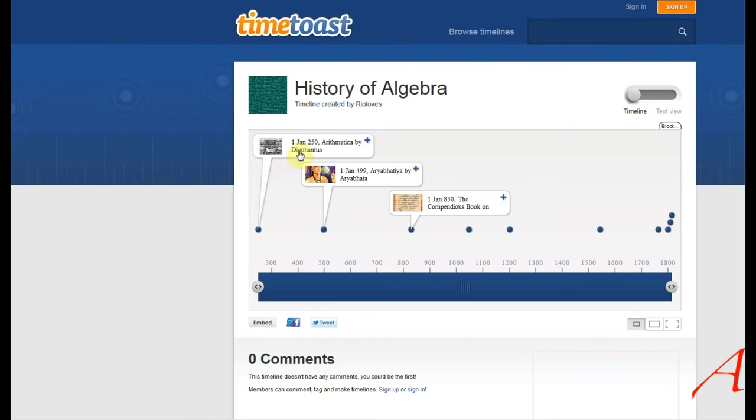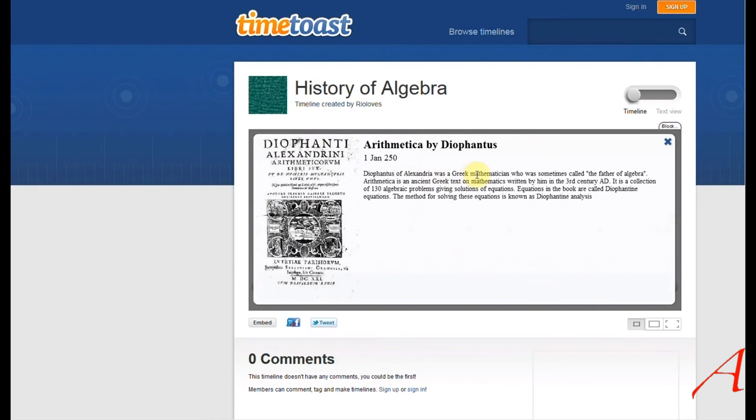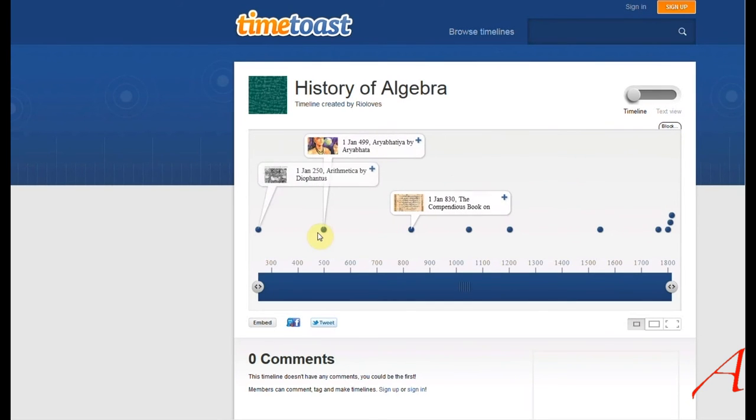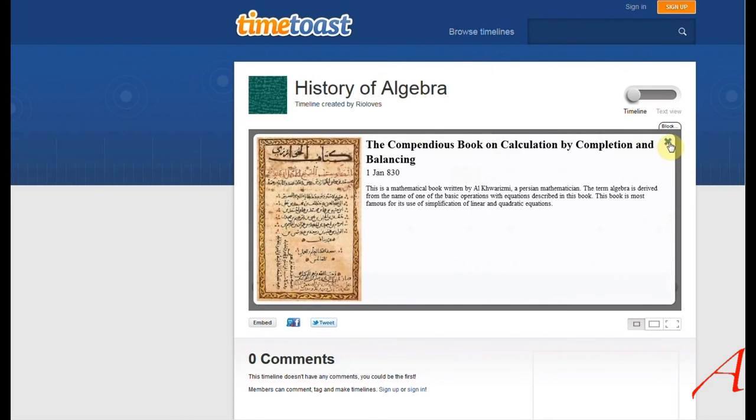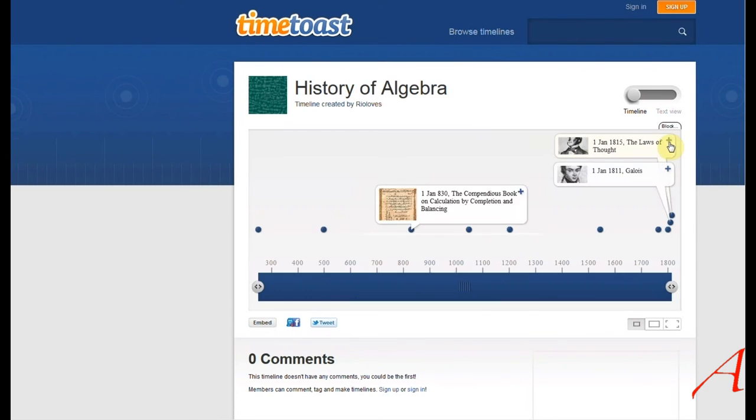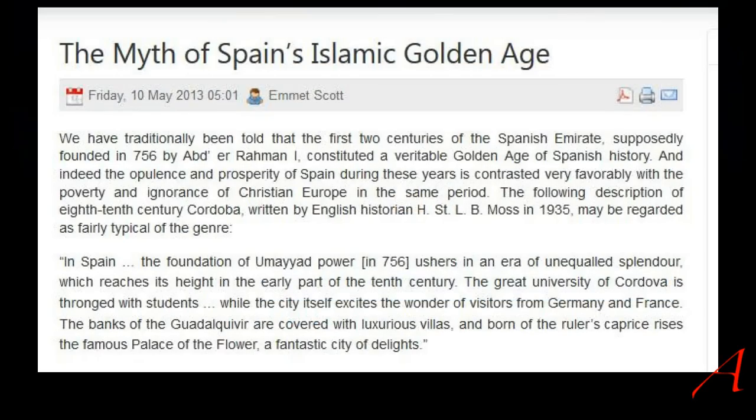Finally, if you still want more evidence, here's a simple timeline starting in the year 250 CE with a Greek mathematician, and then it goes on to others, and then only in 830 CE does it go to Khwarizmi, the Persian mathematician who was probably Zoroastrian, not Muslim at all, and his book on algebra.